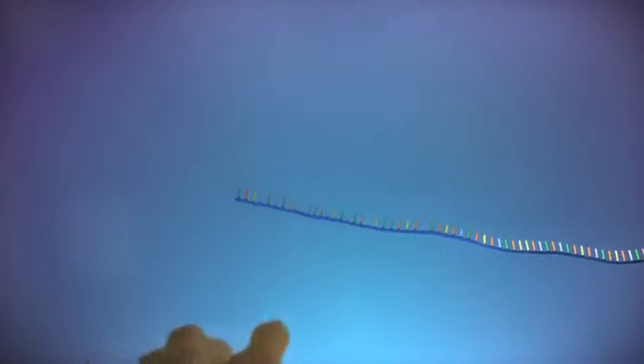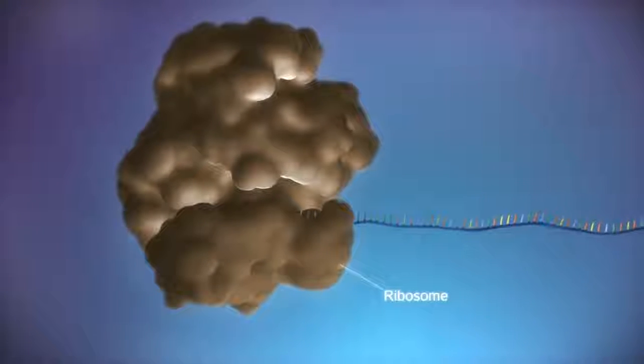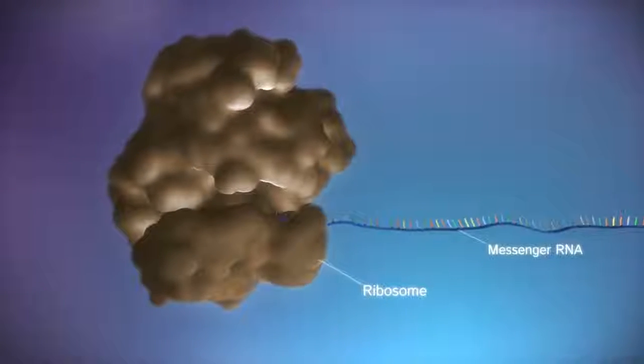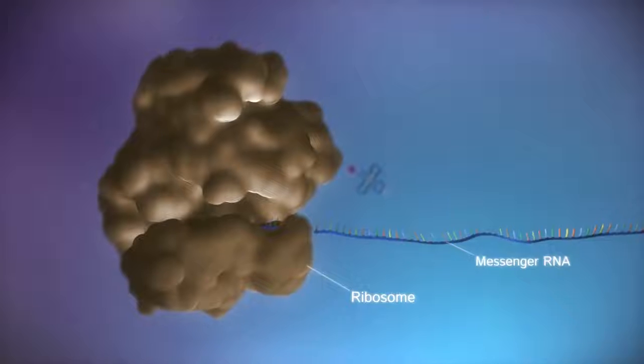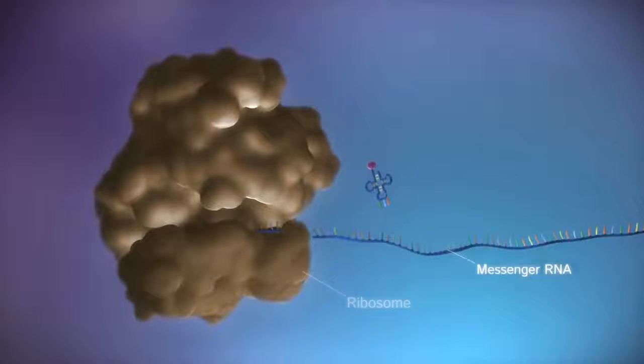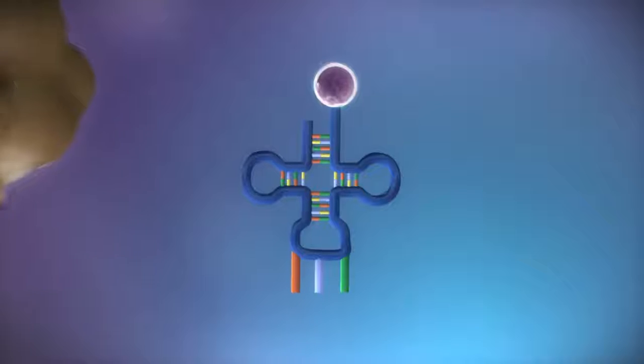Protein factories in the cytoplasm, called ribosomes, bind to the messenger RNA. The ribosome reads the code in the messenger RNA to produce a chain made up of amino acids.